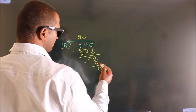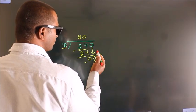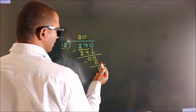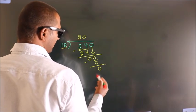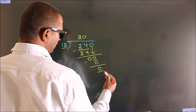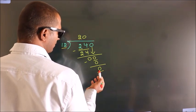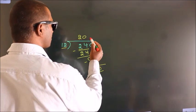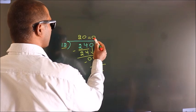After this, no more numbers to bring down. And we got remainder 0. So this is our quotient.